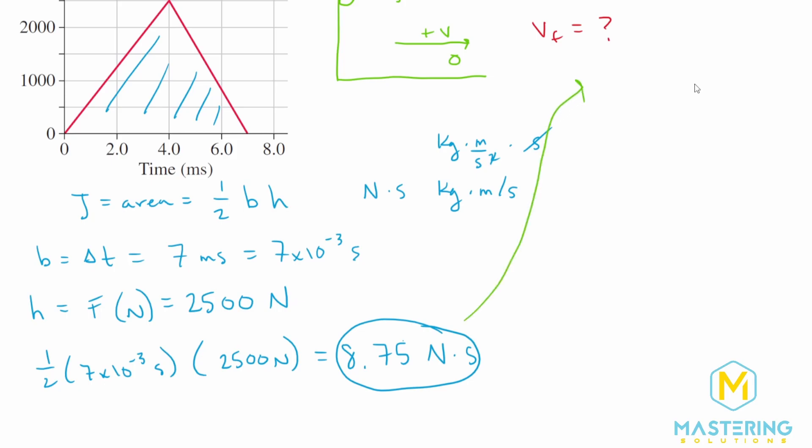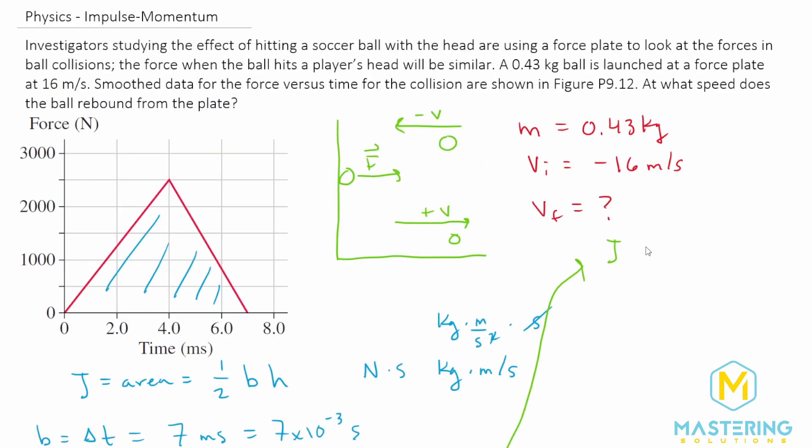So J is equal to change in momentum, which is p final minus p initial. If we simplify that further, p is mass times velocity. So mv final minus mv initial.